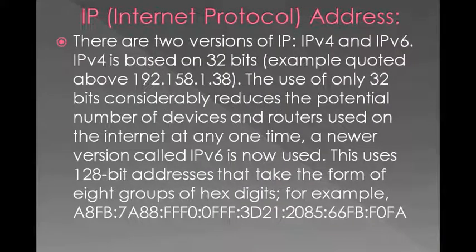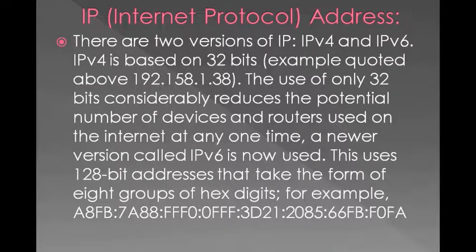There are two versions of IP address. The previous one was IPv4 and the current one, used more and more now, is IPv6. We developed a new version because IPv4 addresses were limited and almost all have been used up. Since internet users multiply every day, we needed another method for assigning IP addresses, so IPv6 was developed. IPv4 was based on 32 bits — for example, 192.158.1.38 — whereas IPv6 consists of 128-bit addresses taking the form of eight groups of hexadecimal digits.